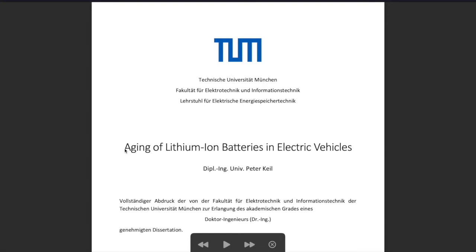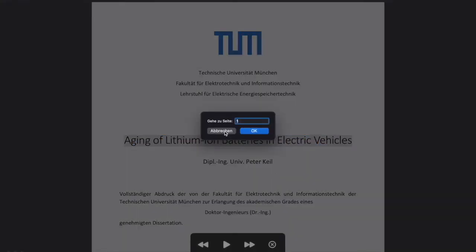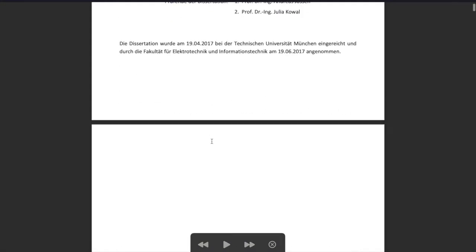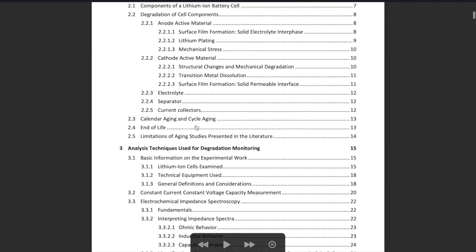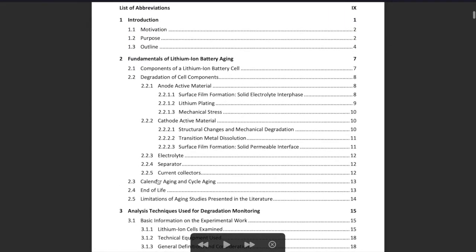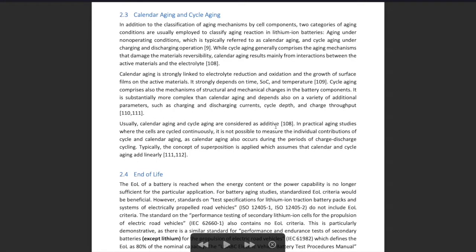So first, let's see what is actually the aging of lithium batteries, which are in all of our devices. This is a study from the Technical University in Munich. There are two aging processes: one is calendar aging and the other one is cyclic aging.